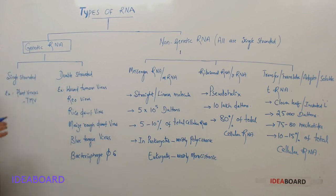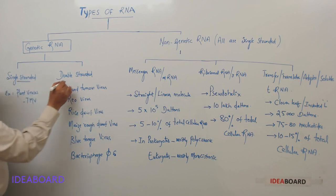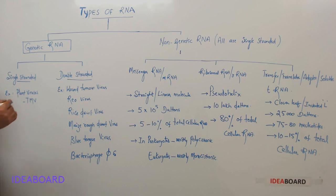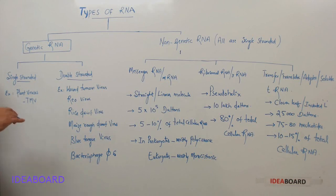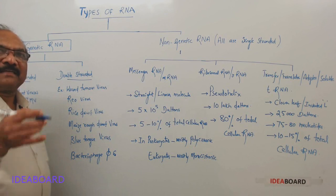This genetic RNA, which is present only in viruses, may be single stranded or it can be even double stranded. And this RNA generally does not require DNA. Only in some viruses, it will undergo reverse transcription and produce DNA, and from DNA, RNA is formed. But in the majority of these RNA viruses, the RNA can replicate on its own inside the host cell.